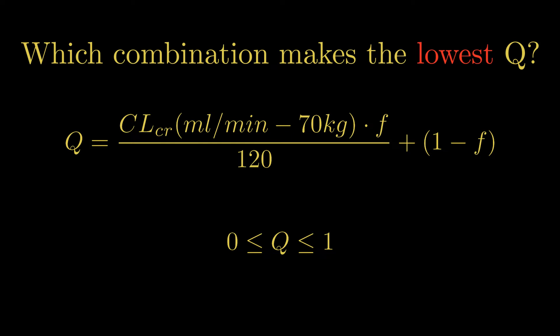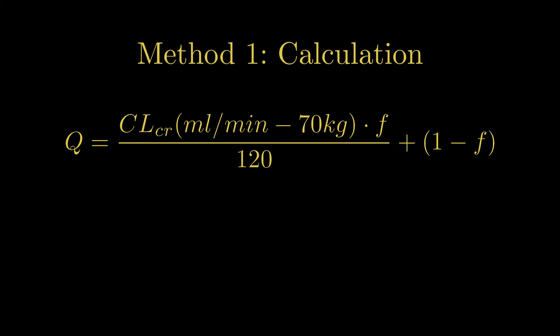And the surefire way to approach this question would be to use the equation to evaluate all of the scenarios. So the equation is Q equals the normalized creatinine clearance over 120 milliliters per minute times the fraction excreted unchanged, plus 1 minus the fraction excreted unchanged.